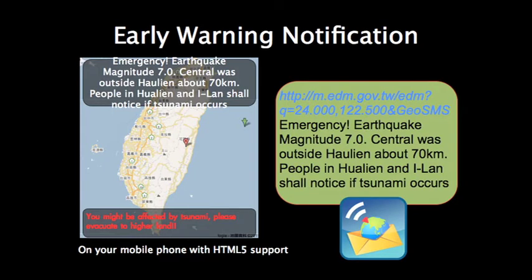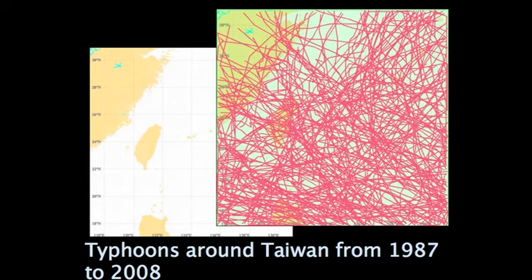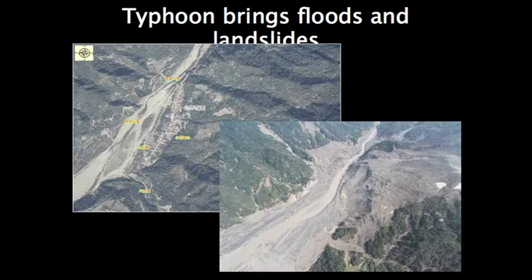This can also be adapted for early warning notifications — either feature phones or smartphones can receive them, but smartphones can bring out more information about the disaster. This picture shows how many typhoons have hit Taiwan in the past 20 years — there are really a lot. After a typhoon hits, it brings floods and landslides. There was a small village called Shaolin Chen with about 300 people; after a landslide, everything was gone — a really big tragedy in Taiwan.